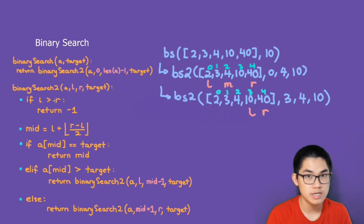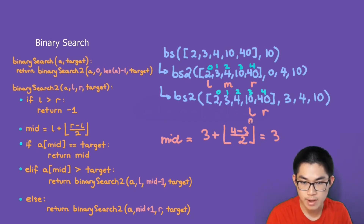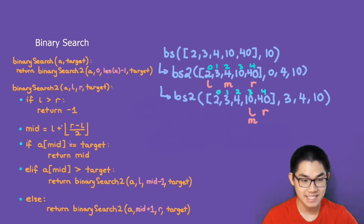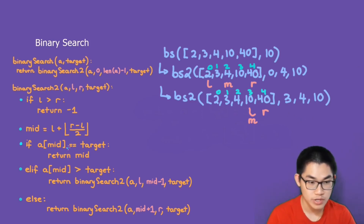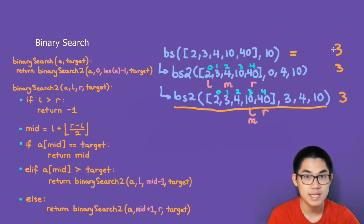Is L larger than R? No, L is still less than R, so we calculate mid: 3 plus floor of (4 minus 3) over 2, which equals 3. Mid is right here. Looking at the array at mid, that's number 10. Is 10 the same as the target 10? Yes! We found our target. All we do is return mid, which is index 3. This entire function returns 3, and going up the recursion tree, the result at the top is 3. That completes the binary search.